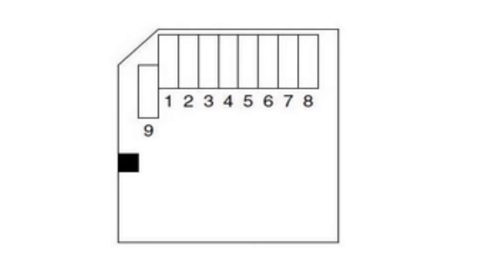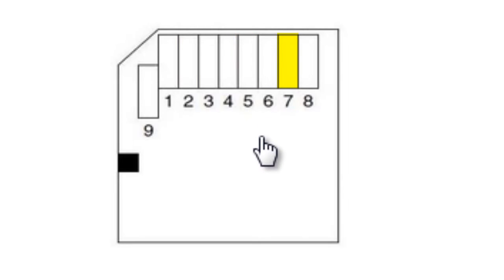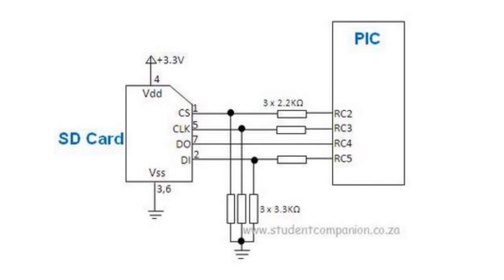In SPI bus mode, which is the most commonly used mode for SD cards, the normal SPI pins are used. For the SD card, the chip select pin is pin 1, data in is pin 2, the clock pin is pin 5, data out is pin 7, the positive supply is pin 4, and the ground is pin 3 and pin 6. The SD card requires 3.3 volts, so the normal 5 volts of your PIC microcontroller is not sufficient for the SD card. The SD card input voltage is 2.48 volts, so we need a voltage divider using resistors to set these voltages correctly.